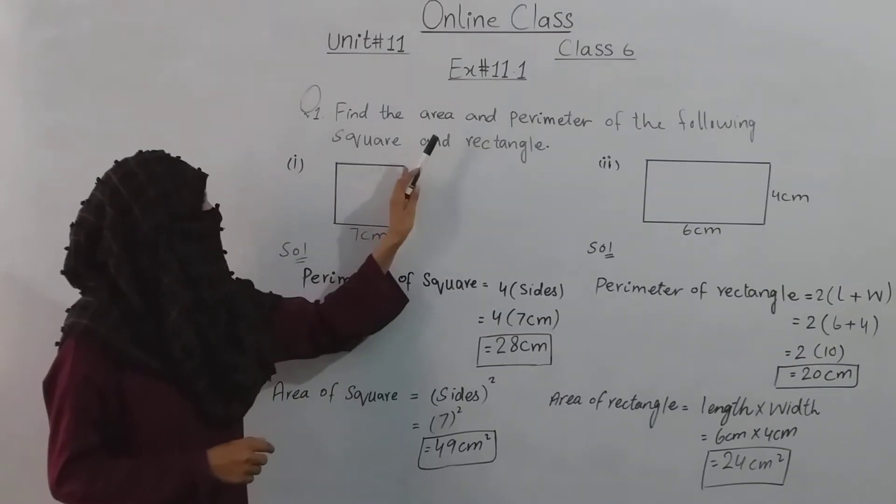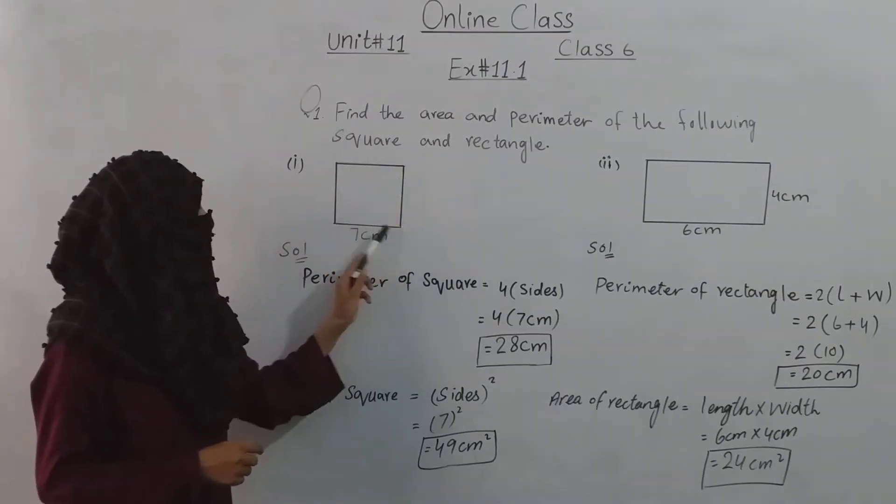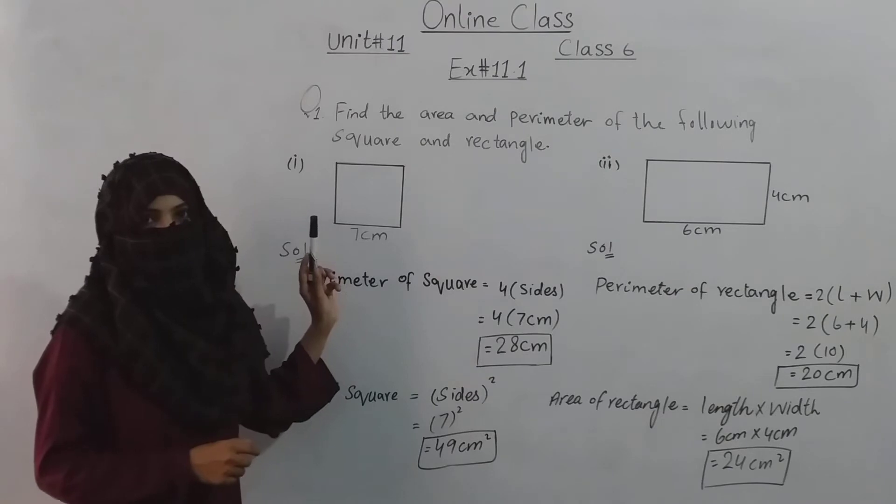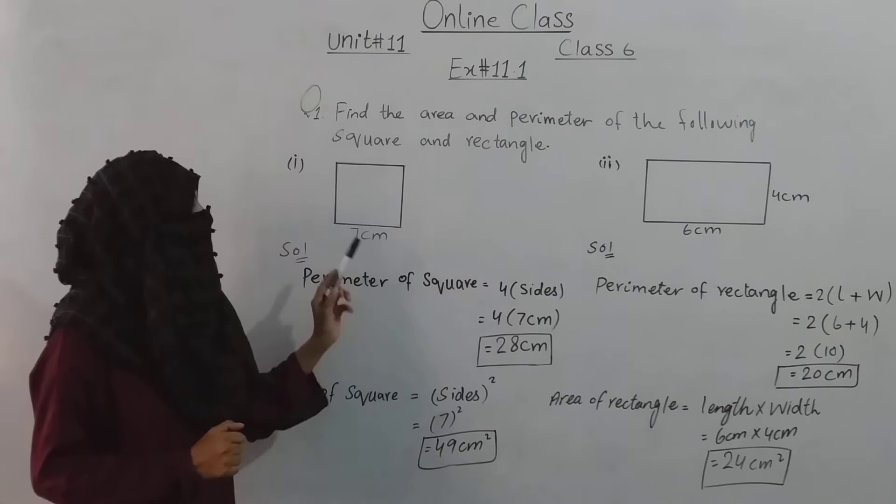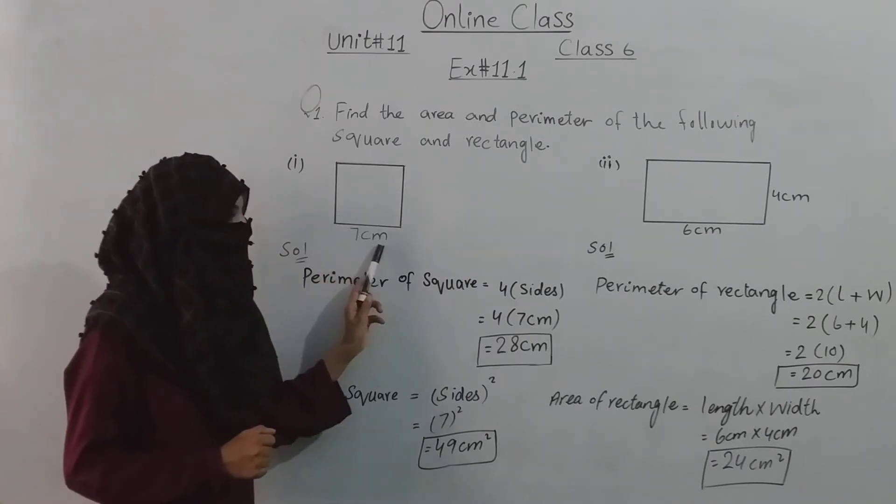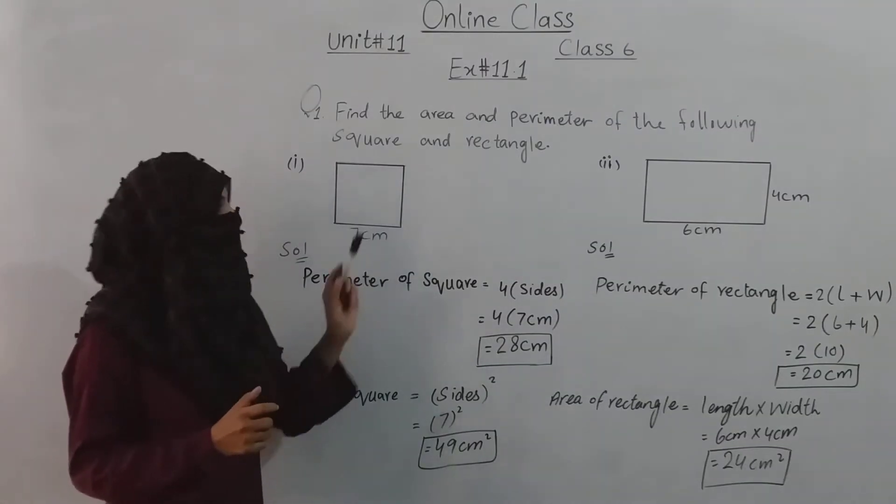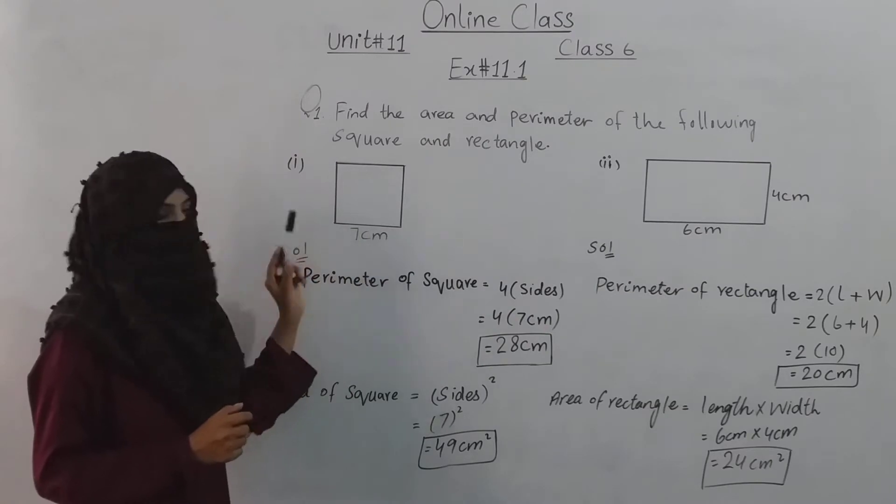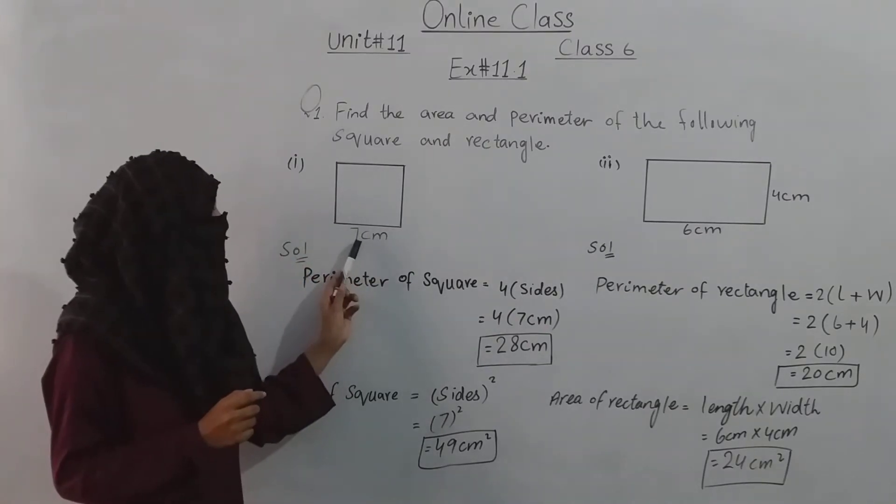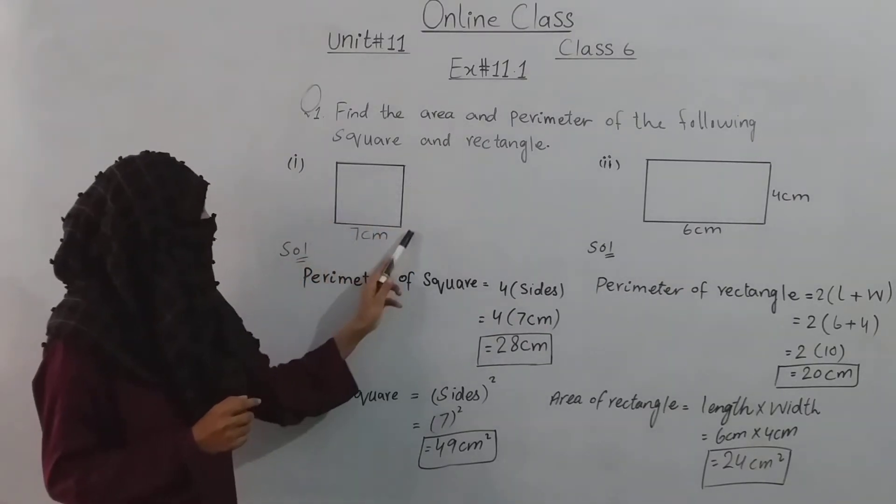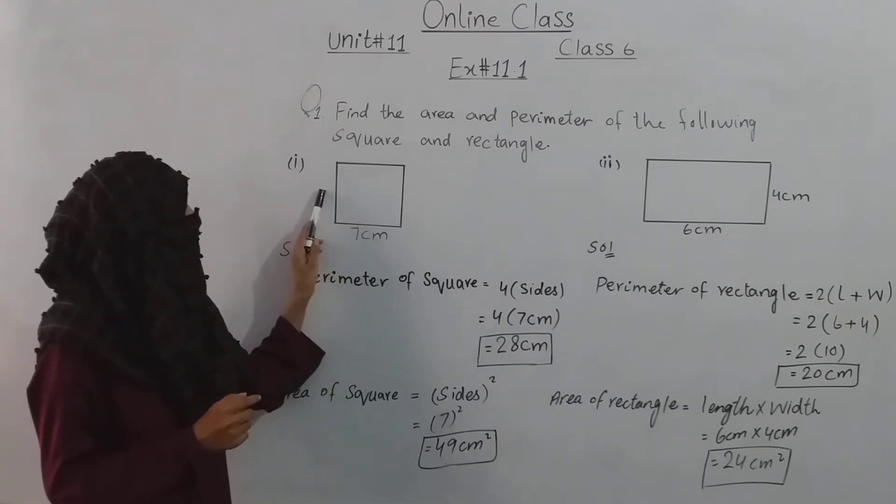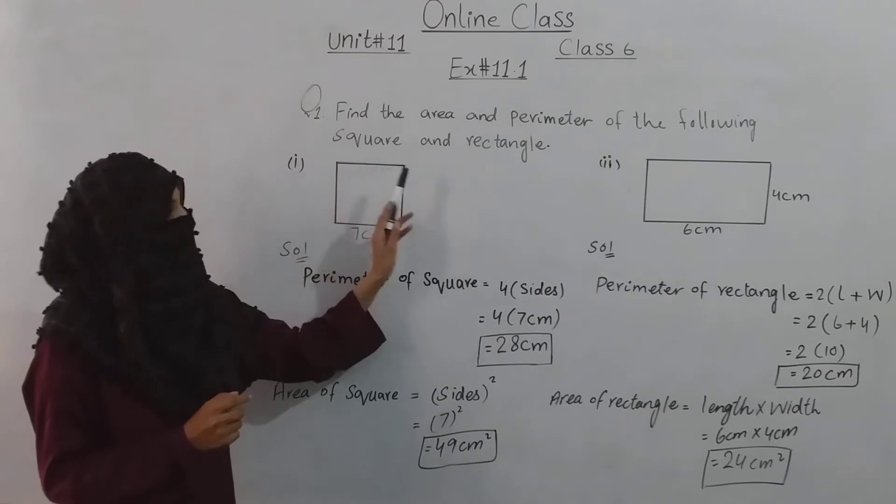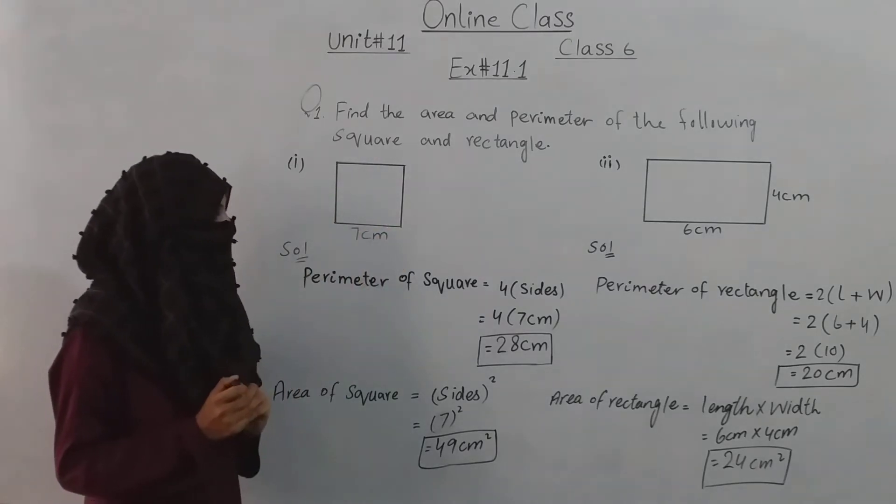A square is a shape that has four equal sides. The side given to us is seven centimeters. Since a square has four equal sides, this means all four sides are seven centimeters each.